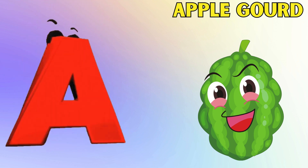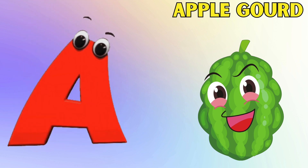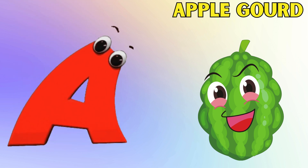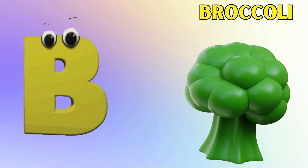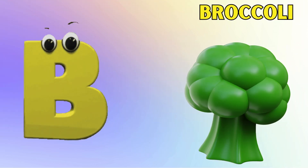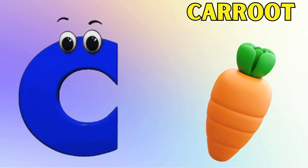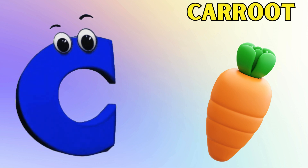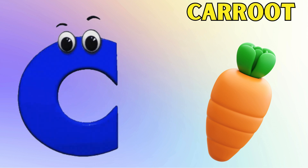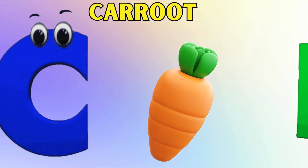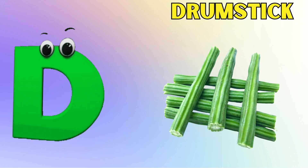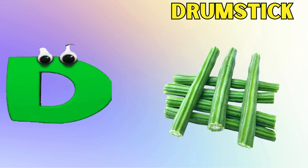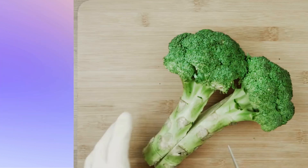A is for apple gourd, apple gourd. B is for broccoli, broccoli. C is for carrot, carrot. D is for drumstick, drumstick.